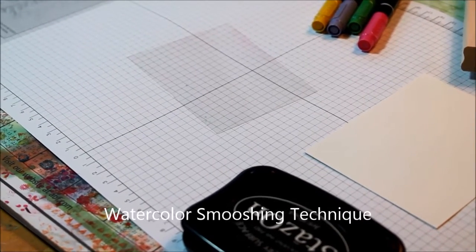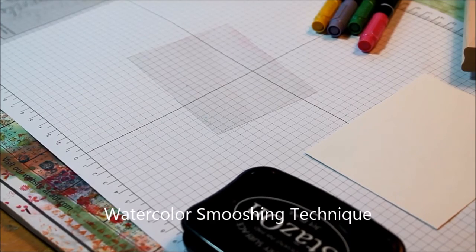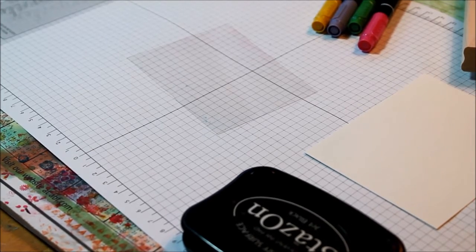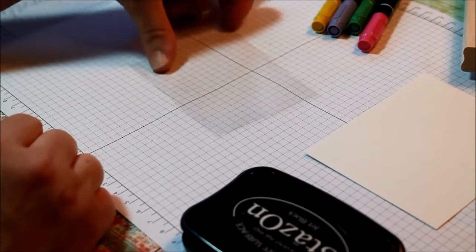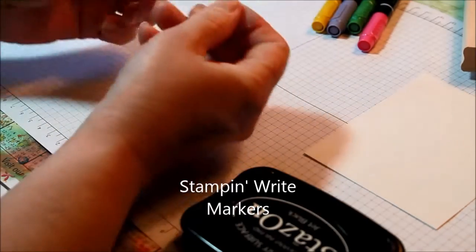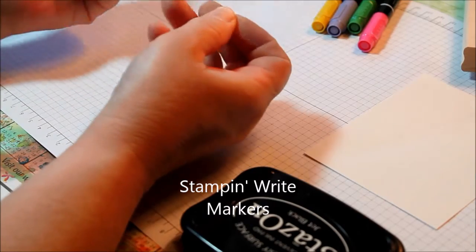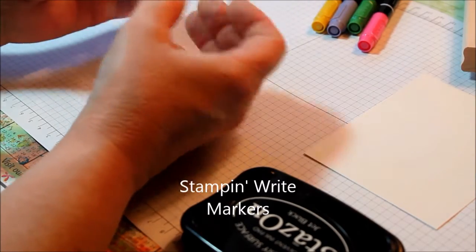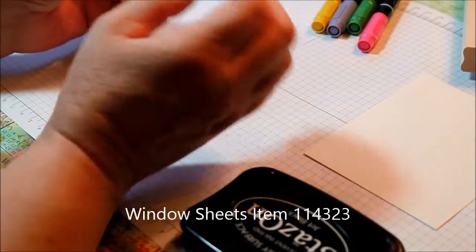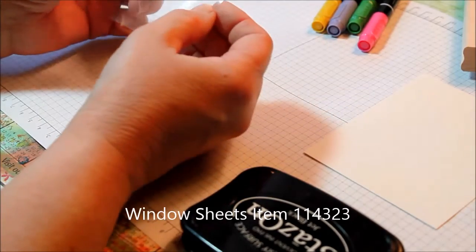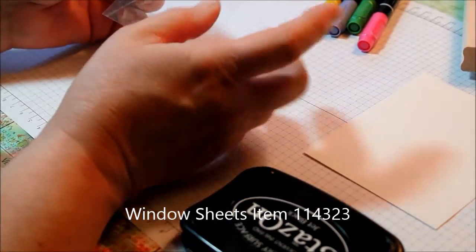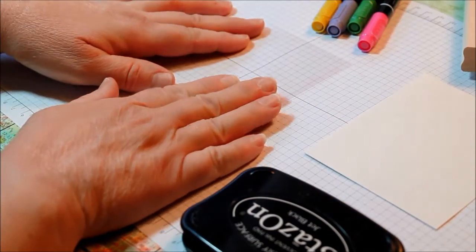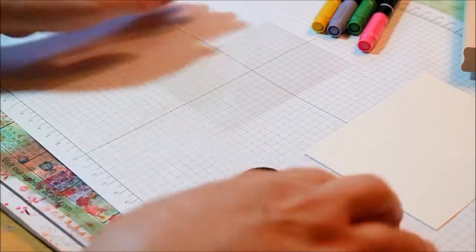Hi stampers, today I'm going to show you a fun watercolor technique using the Stampin' Write markers and watercolor paper. Now for my palette I'm using a piece of window sheet - you could use anything with a hard surface, saran wrap, a tray, something that you can put color on to get wet and then clean off. It doesn't matter what you're going to use but the window sheets work great.